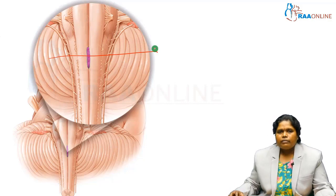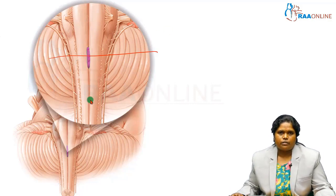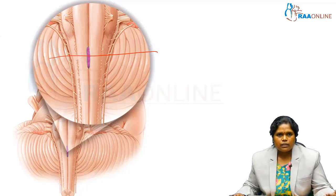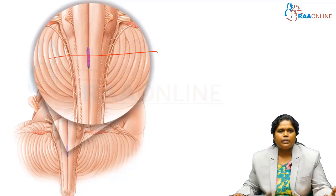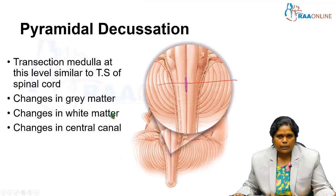This level section will be more or less similar to the spinal cord section, because the spinal cord is continuous with the medulla. We are going to study the transverse section by discussing what changes are occurring in the gray matter, the central canal, and what changes are going to occur in the white matter.